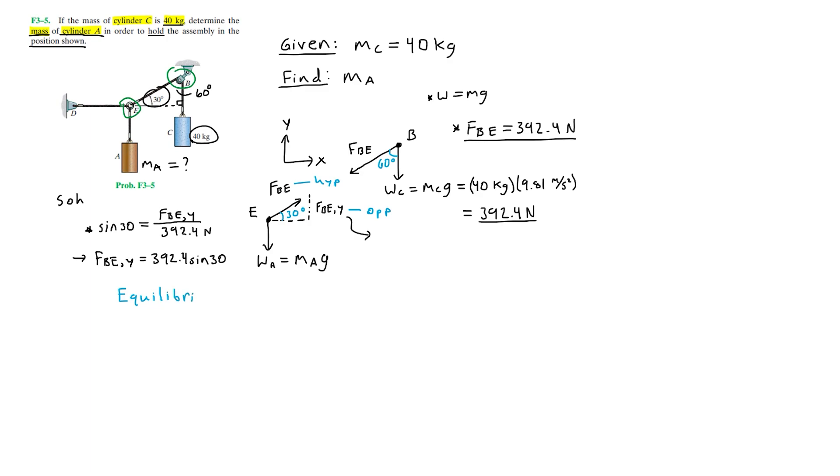Now that we know this Y component of the force, we can use equilibrium in the Y direction to solve for MA. We set the summation of forces in the Y direction equal to zero, assuming up as positive. I'll write down 392.4 sine of 30 here. For our sum of forces in the Y direction, we have 392.4 sine of 30, and this is positive because the magnitude of force FBEY points towards the positive direction, which is up and to the right, which results in a positive Y component.